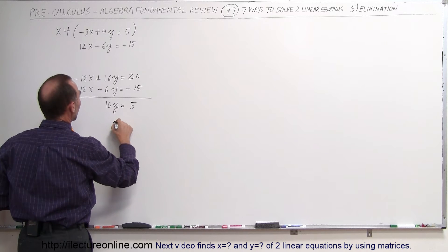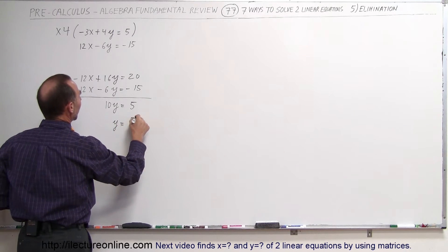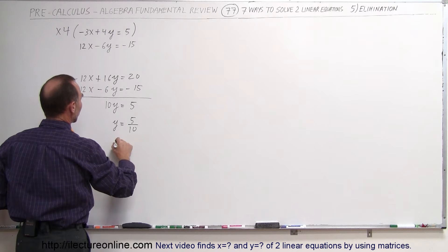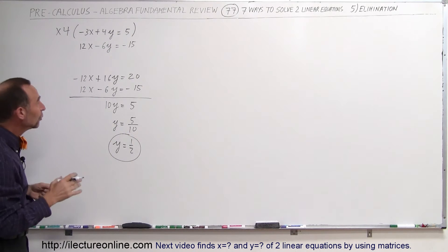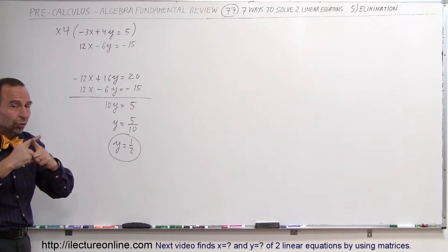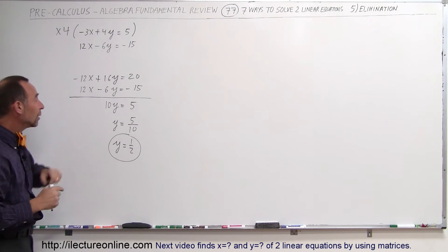And so here I can say that y is equal to 5 divided by 10. And so therefore y is equal to 1 half. So that's half the solution right there. I know now that the place where the two lines cross have a y coordinate equal to 1 half.